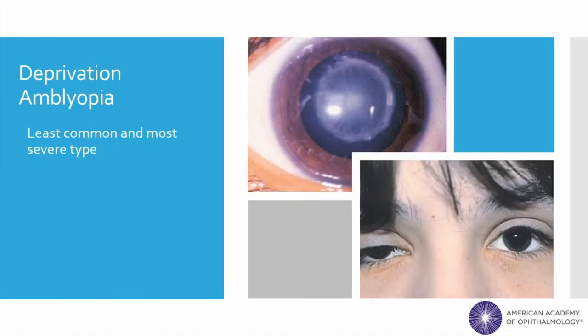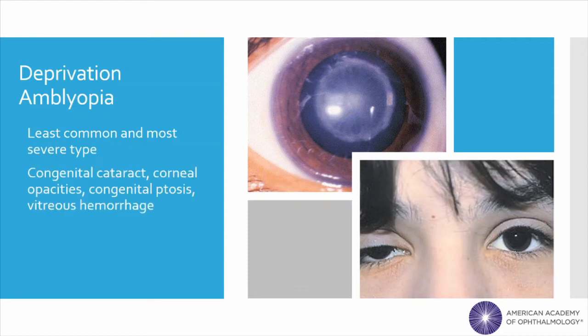Finally, deprivation amblyopia is the least common and most severe type of amblyopia. This occurs when the visual field in one or both eyes is blocked, reducing the visual signals from the eye to the brain. There are many causes of deprivation amblyopia. For example, eyelid ptosis or a droopy eyelid as you can see here, corneal scarring from trauma or infection, cataract which is a lens opacification that can occur from birth or be acquired from a systemic condition or trauma, and vitreous hemorrhage or bleeding in the back of the eye.